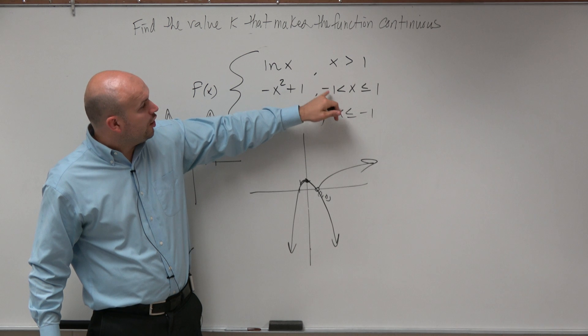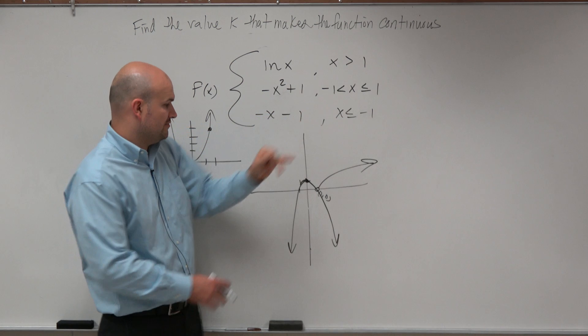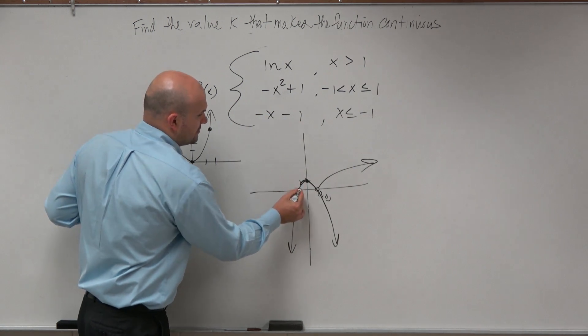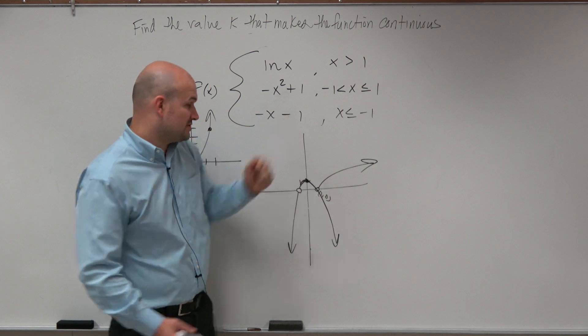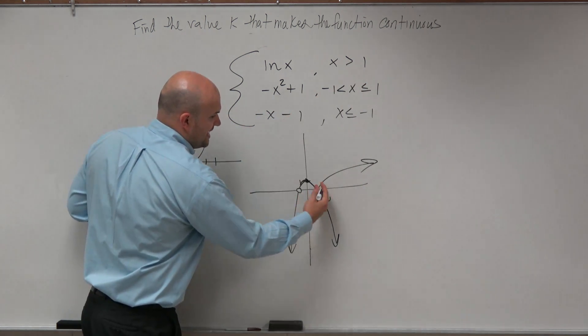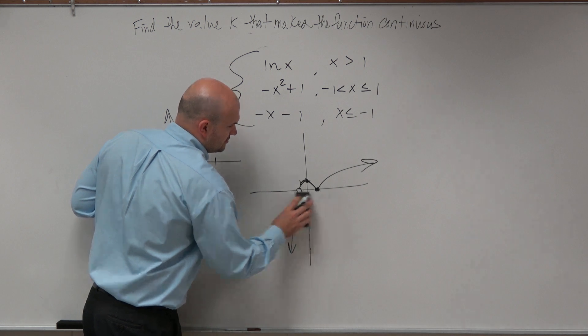So anyways, however, this one says only graph this function between negative 1 and 1. So x is greater than negative 1, but not equal to negative 1, so that's a hole. And x is less than or equal to, so that's going to be filled in. But anything outside 1 and negative 1 is now being erased.